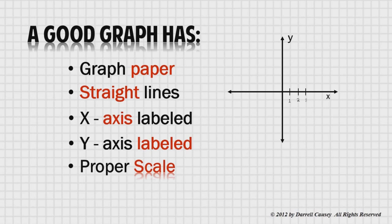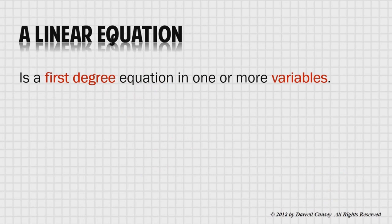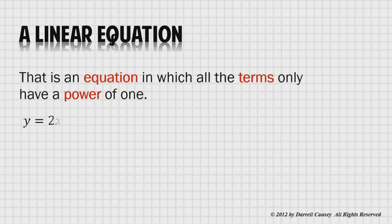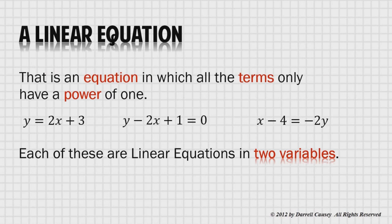A linear equation is a first degree equation in one or more variables. That is an equation with no power higher than 1. y equals 2x plus 3, y minus 2x plus 1 equals 0, and x minus 4 equals negative 2y. Each of these is a linear equation and the graph of each of these is a line. That's why we call them linear equations.